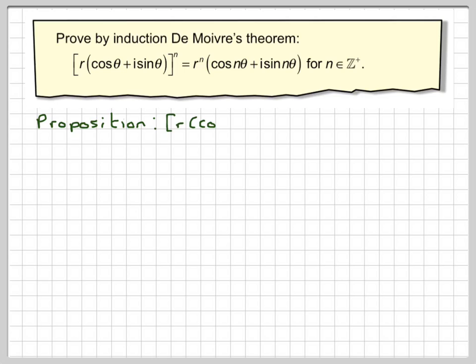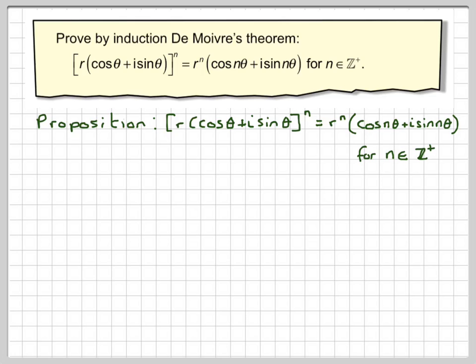So write down the proposition to begin with. Now what we're going to do is prove true for n equals 1, which is the first one of this set of numbers.